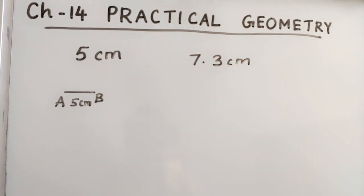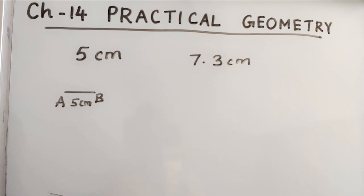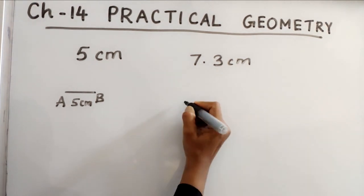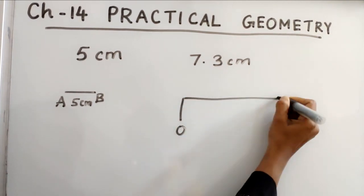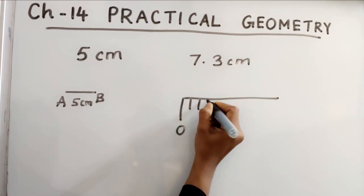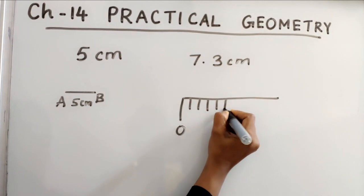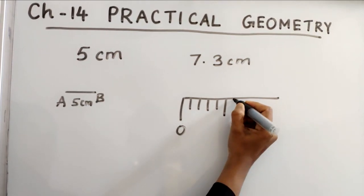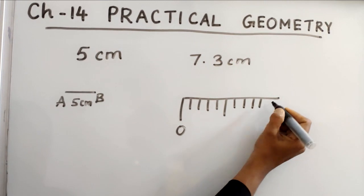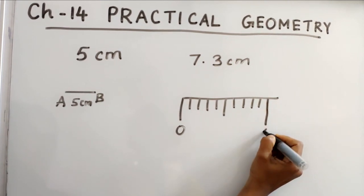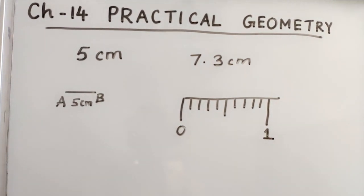And if the measurement is 7.3 cm, then how to draw it? We know that in a ruler, between each centimeter there are 10 divisions. The 5th division is slightly bigger. Then 6th, 7th, 8th, 9th, and the 10th division is the next whole number. So here it is 7.3.